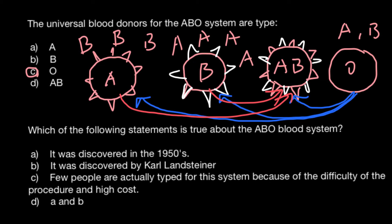Blood group AB doesn't have antibodies A or B, so it also wouldn't reject red blood cells with A antigens on the surface. And of course, blood group AB can also receive blood group O, because the red blood cells of blood group O don't have any antigens on the surface at all.